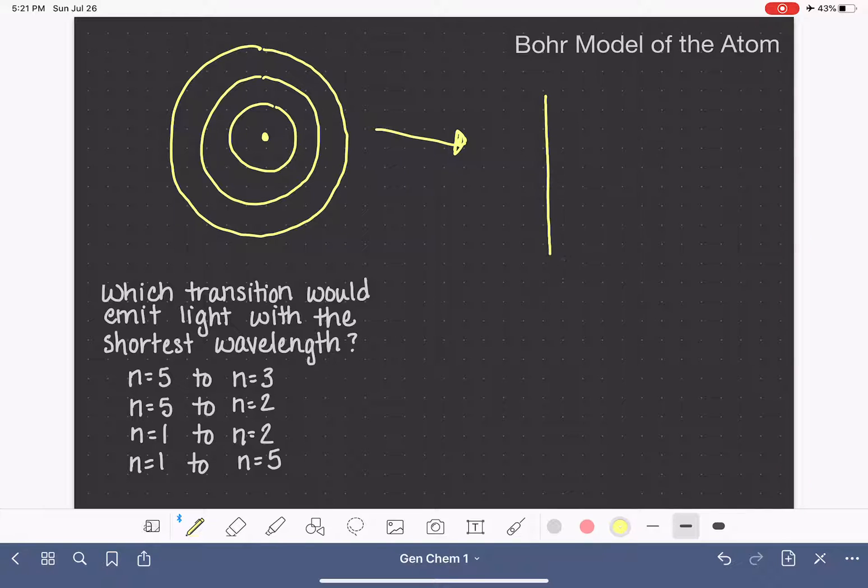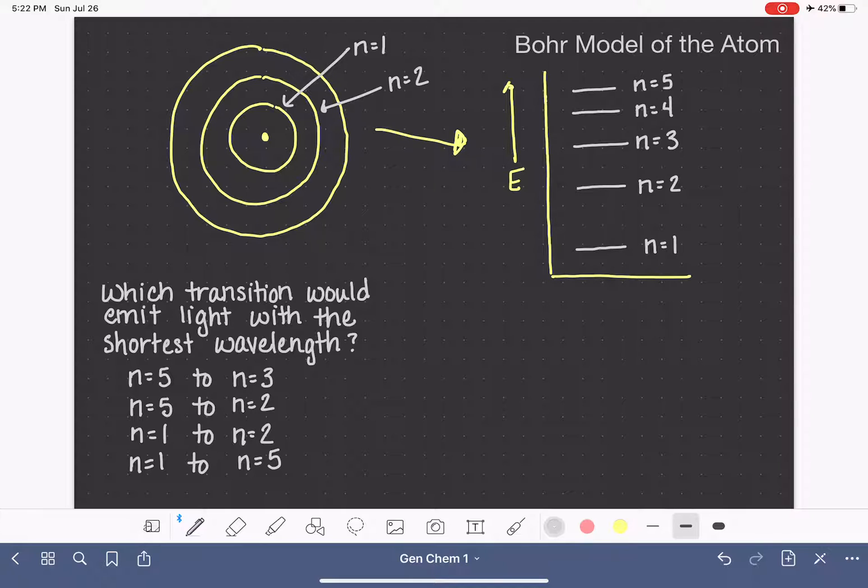We actually draw this in a more graphical form like this, where we have energy increasing on this axis, and then we draw this line, and this line is going to represent the n equals 1 level, which is the innermost level. And then our next line is going to represent the n equals 2 level. It's going to be a lot easier for me to show how these energy levels squeeze closer and closer together when I'm drawing it in this form.